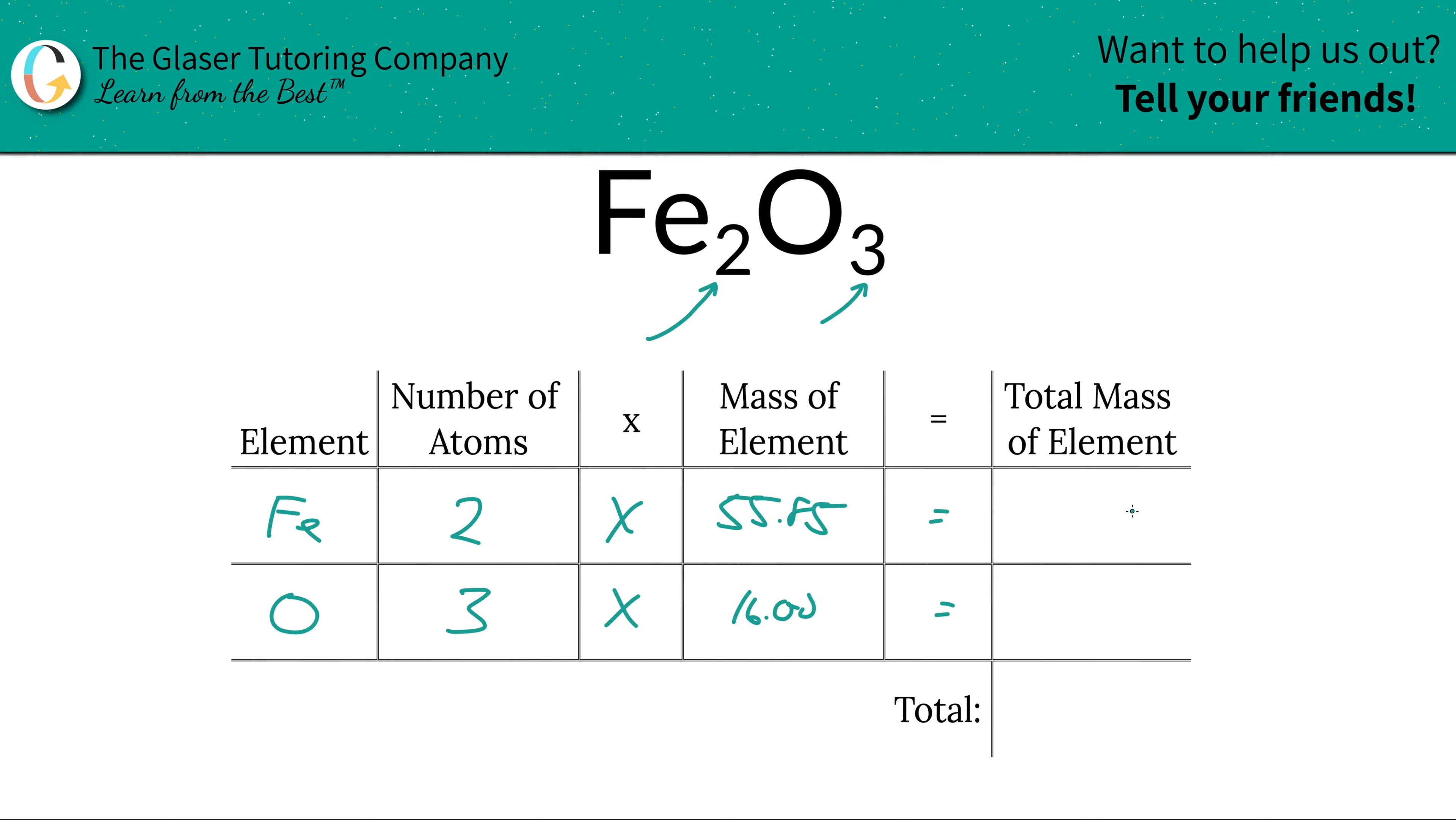So now to find the total mass of the element in the compound, we just simply multiply the mass by the number of atoms. And for iron here we're going to get a total of 111.70. The total then for oxygen, 16 times 3, is going to be exactly 48.